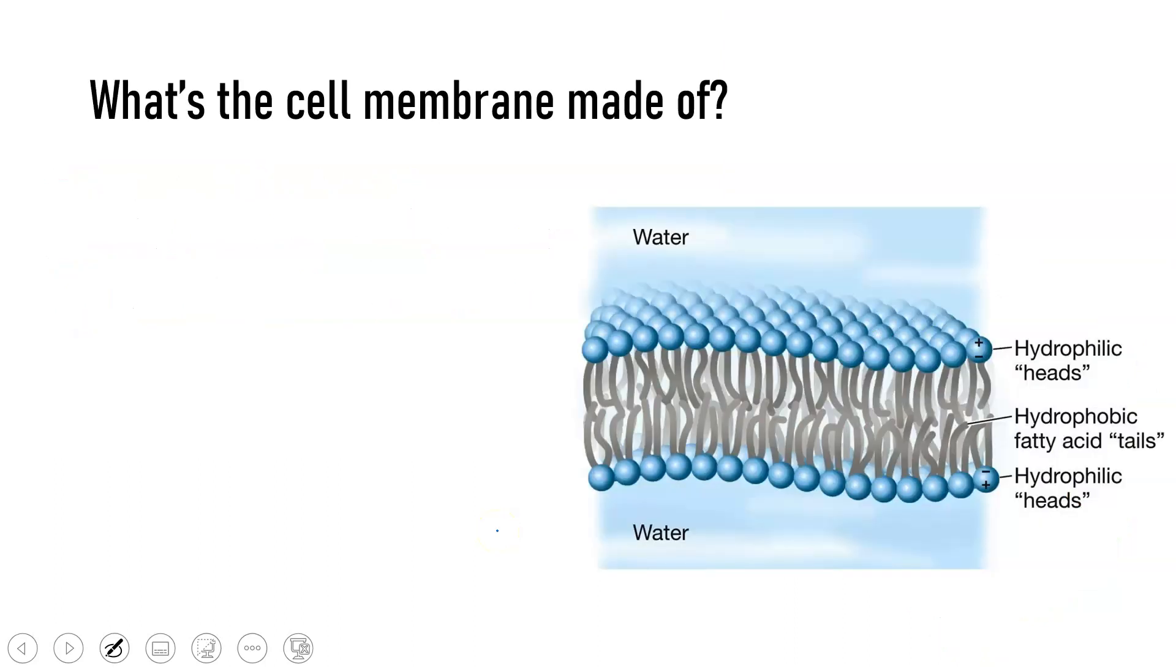What is this cell membrane made of? The cell membrane is a phospholipid bilayer. Once again, we have a complicated science term that we can break down. We know that bi means two, so it has two parts, two layers in this membrane.